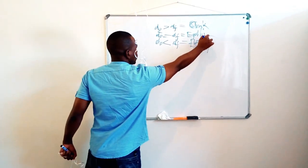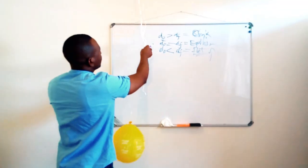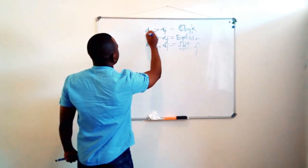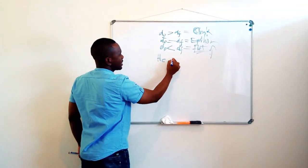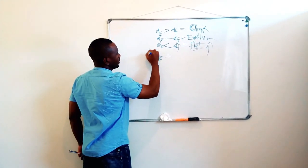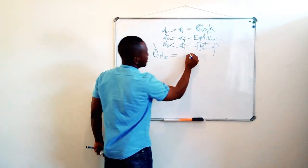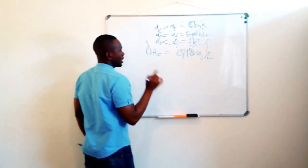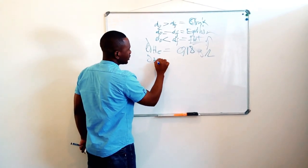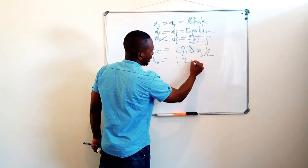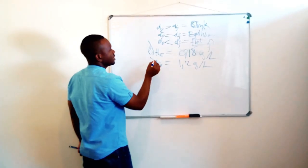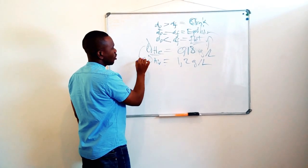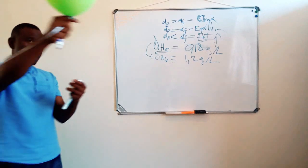I want to put these balloons aside. We all know that helium has a density of 0.18 grams per liter, and air has a density of 1.2 grams per liter. We can see that the density of helium is lower than the density of air.